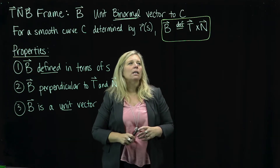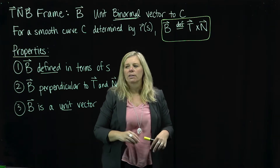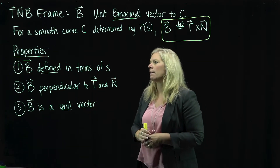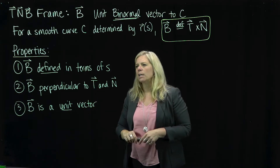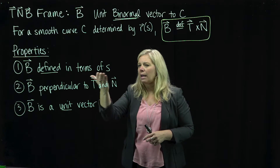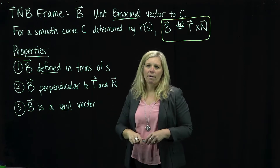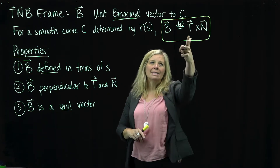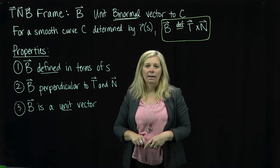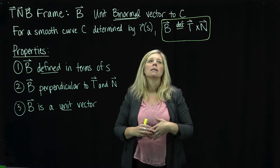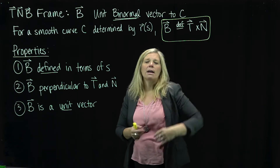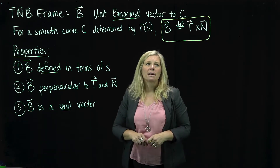Based on that definition of the B vector, there are a couple of important properties we can describe. B is defined in terms of the arc length parameter. Remember that T and N are both defined in terms of the arc length parameter s, so therefore B is also defined in terms of s.